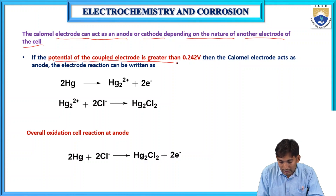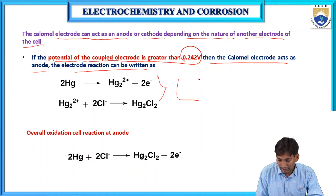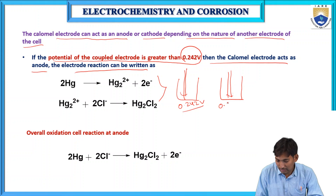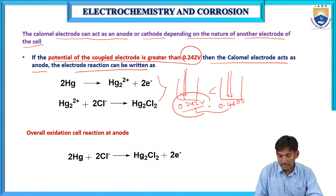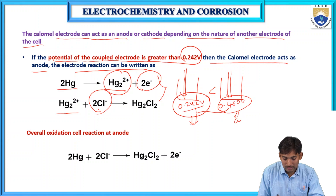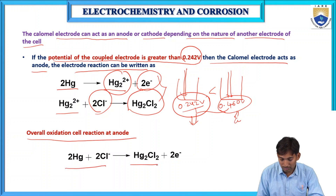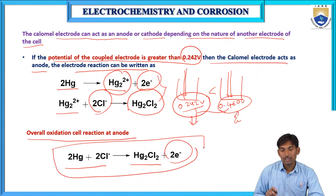If the potential of the coupled electrode is greater than 0.24 volts, then the calomel electrode acts as anode and undergoes oxidation. Mercury is oxidized to Hg²⁺, which reacts with Cl⁻ ions from KCl to form Hg₂Cl₂. The overall oxidation reaction at the anode is: Hg + 2Cl⁻ → Hg₂Cl₂ + 2 electrons.